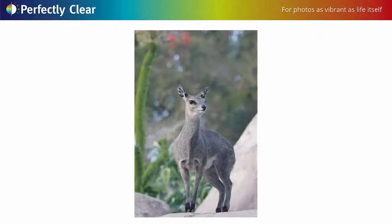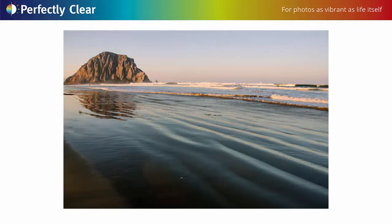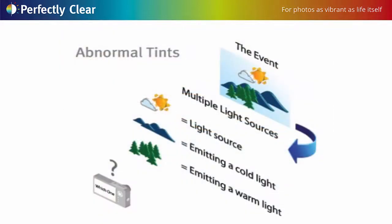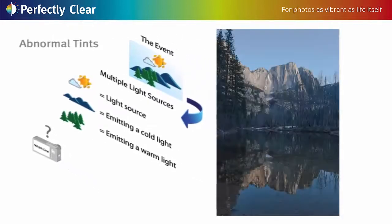Auto white balance looks for the brightest object in the image and assumes that this should be white. In reality, often the brightest object is not white — it could be cream or a pale blue within the image. The result is an image with an abnormal tint.